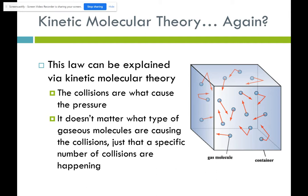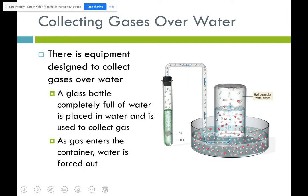This law is easily explained by kinetic molecular theory — pressure is created when gas molecules hit the wall of a container and bounce off. It doesn't matter what type of gas molecules cause those collisions; it's the number of collisions that matters. That's why we can just add up those individual pressures to get the total pressure.